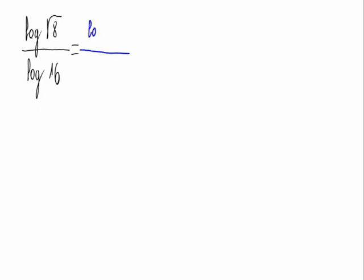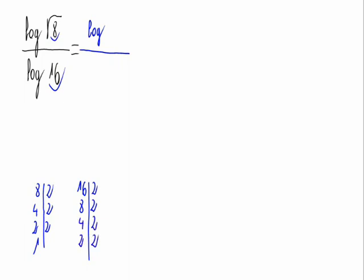Let's begin expressing 8 and 16 as prime numbers. So, 8 divided by 2 is 4, divided by 2, 2, divided by 2, 1. And now with 16, 2, 8, 2, 4, 2, 2, 2, 1. So, 8 would be equal to 2 cubed, and 16 is 2 to the fourth.